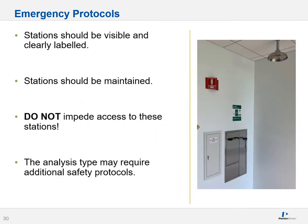Emergency stations should be visible and clearly labeled. They should be maintained — many items need to be checked for operation on a half-yearly, monthly, or annual basis, and usually a professional needs to be hired. Most importantly, do not impede access to these stations. Don't put boxes, pipette tips, or anything around these emergency stations — you should be able to get to them easily from any part of your lab. Remember that your analysis type may require additional safety protocols, such as special hoods or exhaust systems, so consult with your health and safety manager, lab manager, or method.